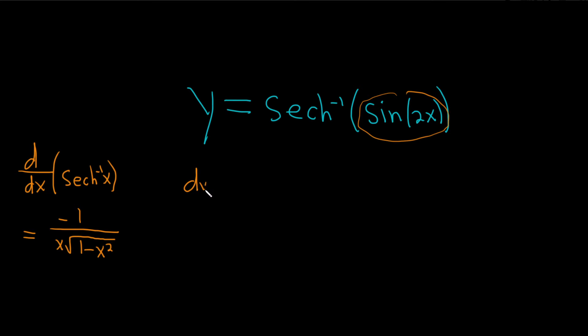So dy/dx, we'll take the derivative of the outside, and we'll leave the inside alone. So we'll evaluate it at the inside. So it's negative 1 over x, but it's not x, it's sine 2x, square root, and then here it's 1 minus sine squared of 2x, okay.